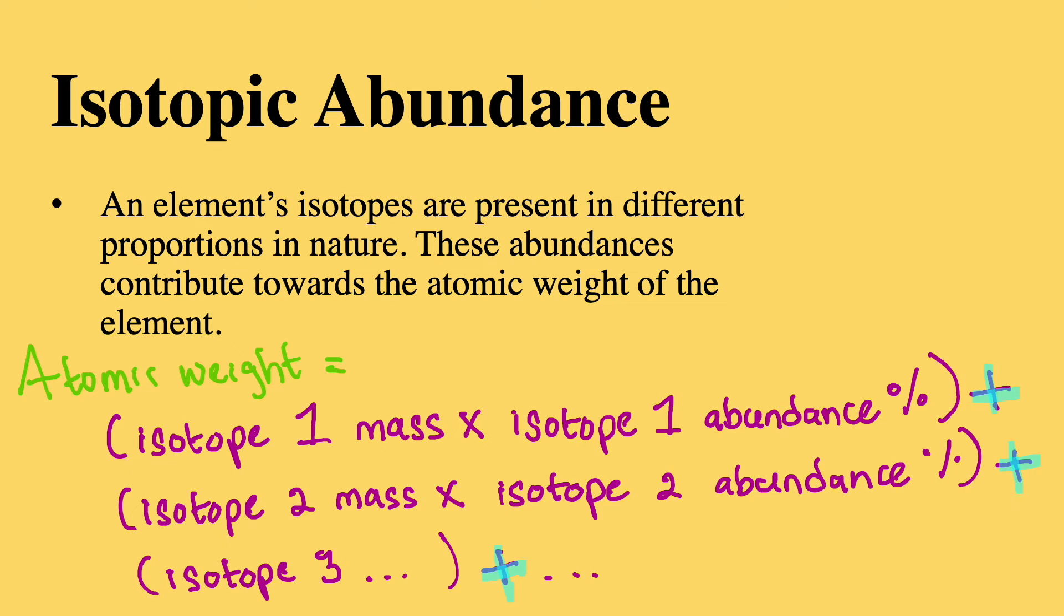Here, the atomic weight is equal to isotope 1 multiplied by the relative abundance percentage of isotope 1 plus isotope 2 multiplied by the relative abundance percentage of isotope 2 and so on.